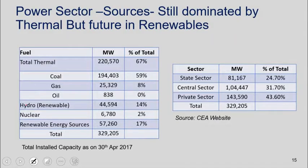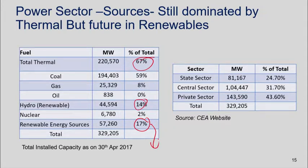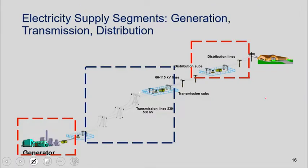Just some interesting facts: today thermal represents 67% of capacity, hydro 14%, and renewables 17%. But given the Prime Minister's commitment, in about 20 years renewables could represent maybe 30% of India's generation capacity. A surprising thing is that the private sector now accounts for about 44% of generation — if you had done this calculation even 10 or 15 years ago it would have been virtually nothing. It's increased a lot because we brought in the private sector via PPP projects to generate power after the Electricity Act of 2003.